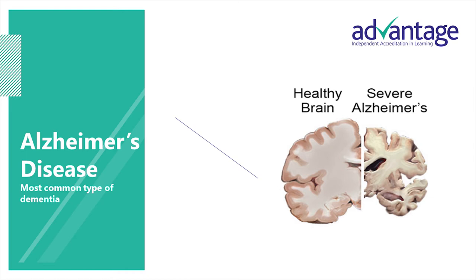These affect the messaging in the brain by reducing some important chemicals. These chemicals are involved with the transmission of messages within the brain. Alzheimer's is a progressive disease, which means that gradually, over time, more parts of the brain are damaged. As this happens, the symptoms become more severe. The deterioration is often described as a gradual slope.